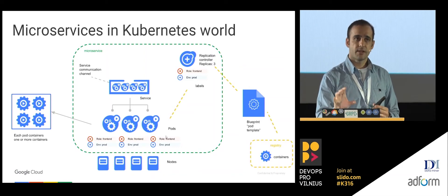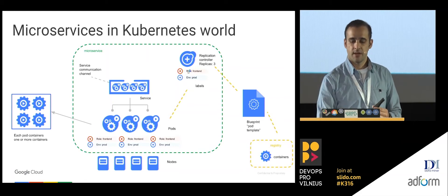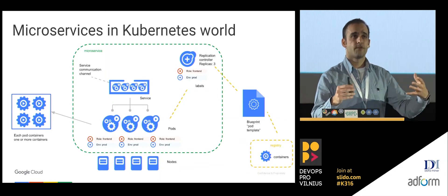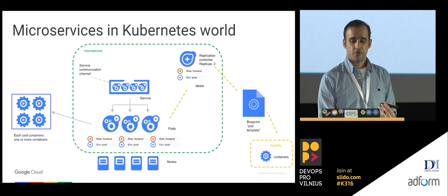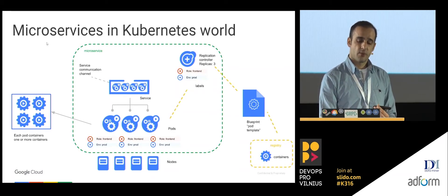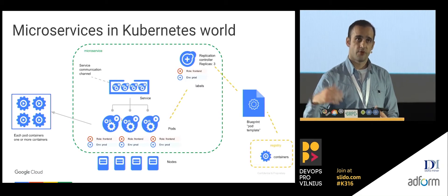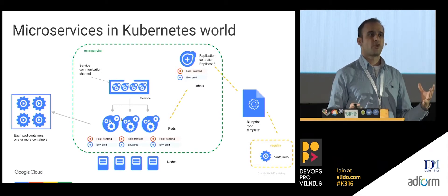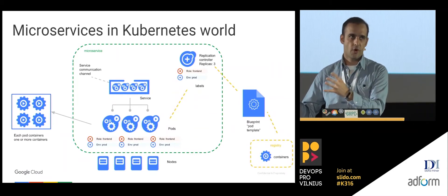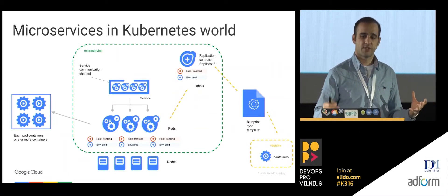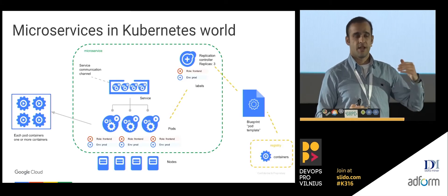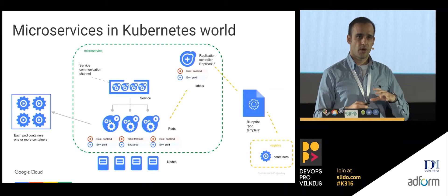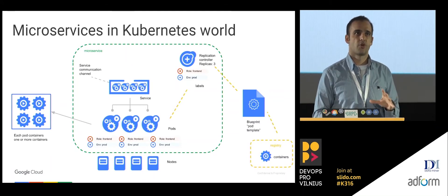In the Kubernetes world, a microservice looks like this: your code is in a container living in some public registry like Docker Hub or Google Cloud image registry. You create a pod template — a pod is the smallest unit Kubernetes schedules, either a single container or multiple. You tell Kubernetes you want three replicas, and it finds the right place to schedule those pods. You can label pods with roles like front-end, back-end, and environments like production or QA. Then you create a service with a stable virtual IP so people from outside can reach your pods.